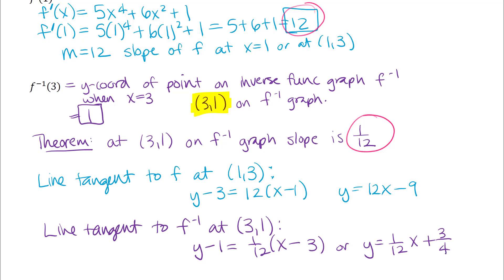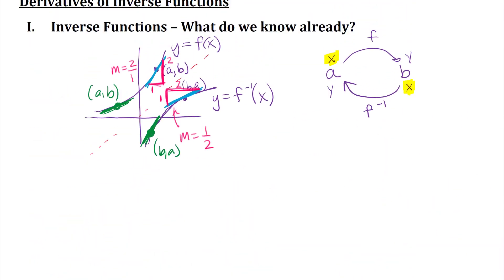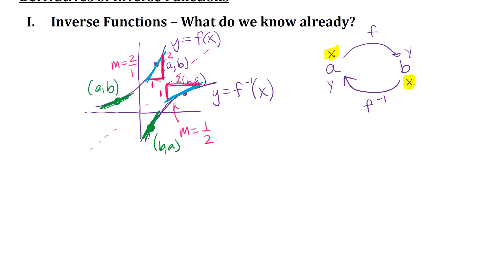So we've got these two equations of tangent lines — to the original function and its inverse — not at the same point, but at corresponding points where inputs and outputs are switched. Scrolling back to the picture helps understand what's really going on: at corresponding points, the slopes of the function and its inverse are reciprocals of each other. You should try the homework problems using this theorem about derivatives of general inverse functions.